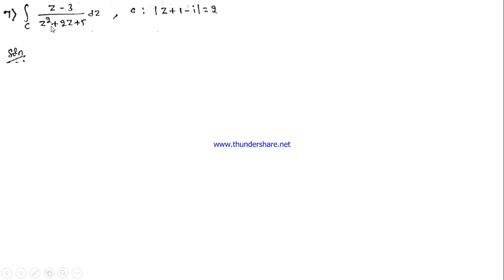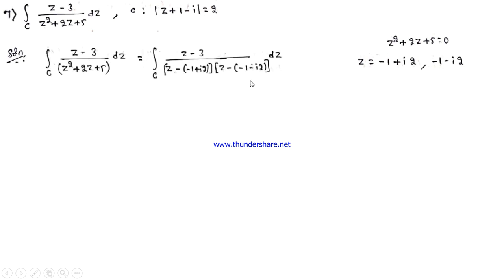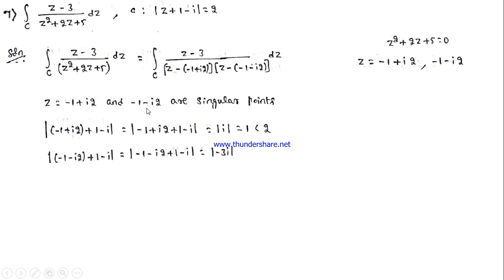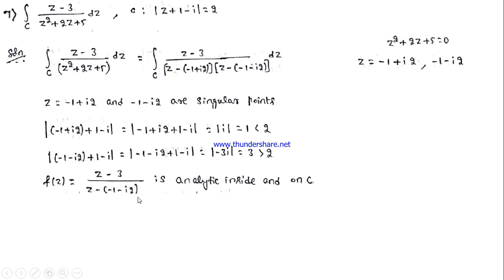Next: the denominator is z² + 2z + 5. Factor it into (z − a)(z − b) by solving the quadratic. The singular points are z = −1 + 2i and z = −1 − 2i. Checking against the given circle: |−1 + 2i| = 1 less than the radius, so this point lies inside; |(−1 − 2i)| = 3 greater than radius, so this lies outside. The analytic function is f(z) = (z − 3)/(z − (−1 − 2i)), and by Cauchy's integral formula the answer is 2πi · f(−1 + 2i). Simplifying gives π(−2 + i).